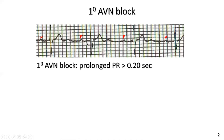0.20 seconds corresponds to one large square — from one solid line to the next solid line, or five little squares. Here we have about eight little squares, which means it's about 0.26 to 0.28 of a second from the atrial contraction to the ventricular contraction. And it's occurring for all of the P waves into the next R waves, so it's a consistent finding — not to be confused with atrial ectopics or other electrical issues.